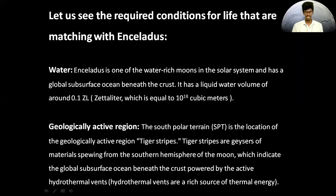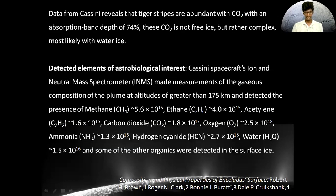Geological active region: the south pole is the location of geologically active region tiger stripes. Tiger stripes are geysers of water, springs, and seismic features of the moon, which indicate that it has an active geological event beneath the crust. Data from the probe reveals that tiger stripes are rich in CO2.